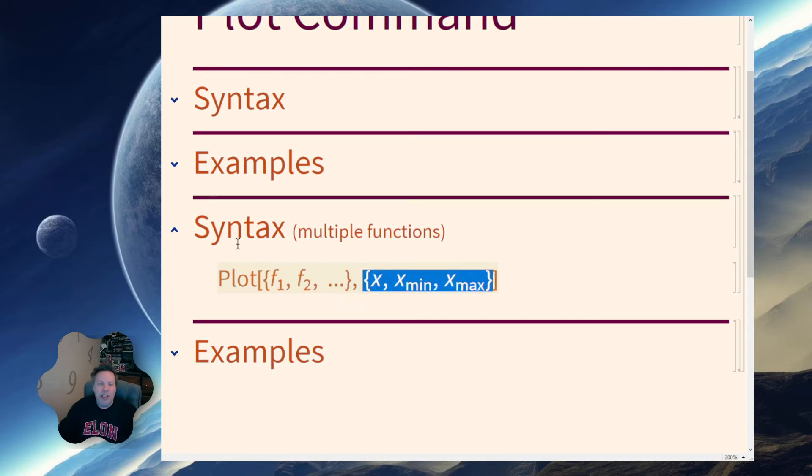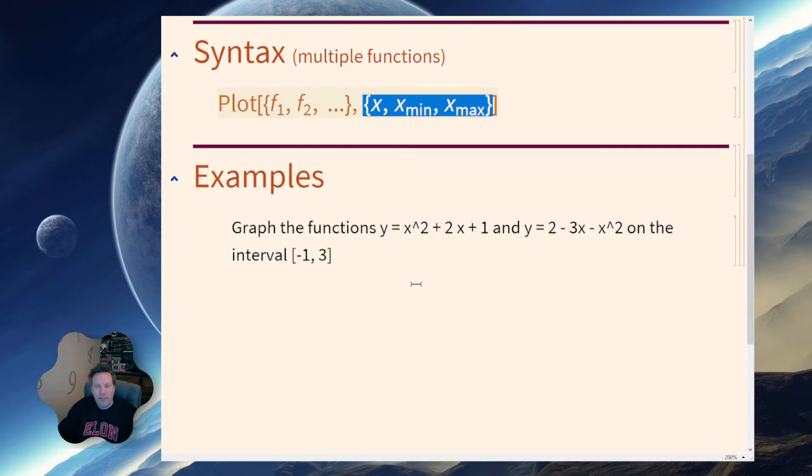Here's an example: I want to graph the functions y equals x squared plus 2x plus 1 and y equals 2 minus 3x minus x squared on the interval negative 1 to 3.